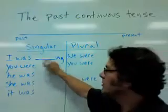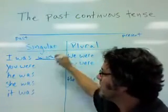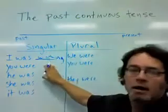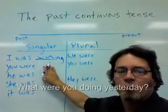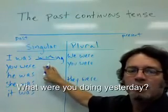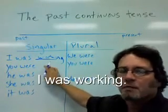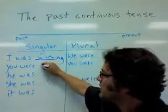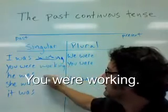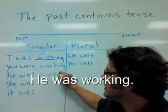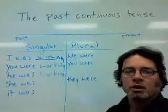For example, the verb 'work' would go here. And if someone asks you, 'What were you doing yesterday?' you could say, 'I was working.' You were working. He was working. She was working. It was working.